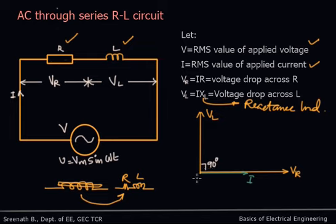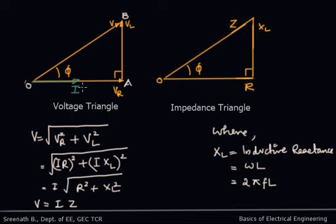Since it is a series circuit, you can take I as the reference since the current through the circuit is the same. Comparing the phasor diagrams of resistor and inductor together, and taking I as reference, Vr is in phase with I and Vl is in quadrature with I. Redrawing the phasor diagram gives a voltage triangle with Vr, Vl, and the resultant V, which is the RMS value of the source voltage.